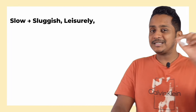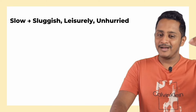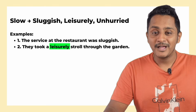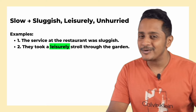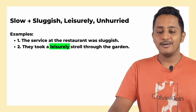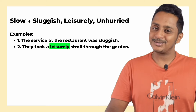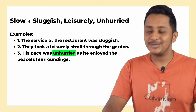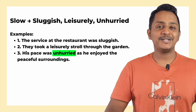The next word is 'slow.' Alternatives are: sluggish, leisurely, and unhurried. For example, instead of 'the service at the restaurant was very slow,' say 'the service was sluggish.' Instead of 'they took a slow stroll,' say 'they took a leisurely stroll through the garden' — note that 'leisurely' fits this context specifically. Instead of 'his pace was slow,' say 'his pace was unhurried,' meaning not rushing, as he enjoyed the peaceful surroundings.